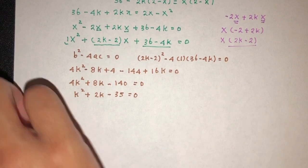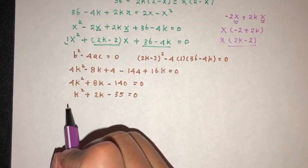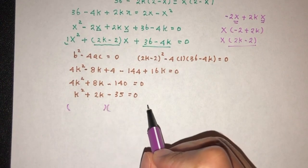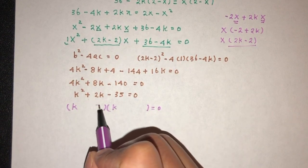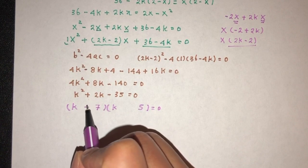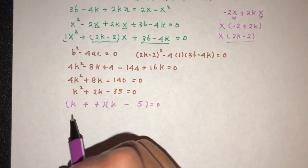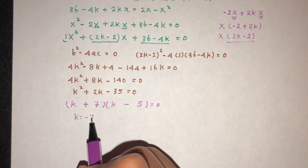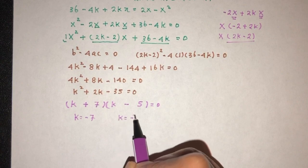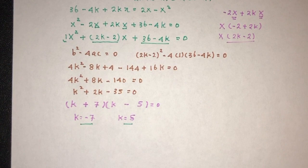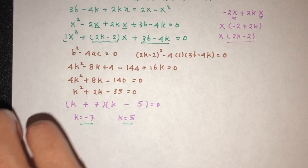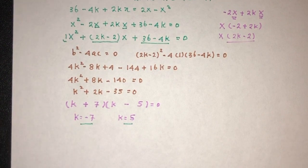I mean by factorization or by using your formula. So that will be k times k. 35 is 7 times 5. To get plus 2, we have to have plus 7 minus 5. k can be minus 7, k can be the value of 5. That will be the two possible values of k for which f(g(x)) equal to x has two equal roots.